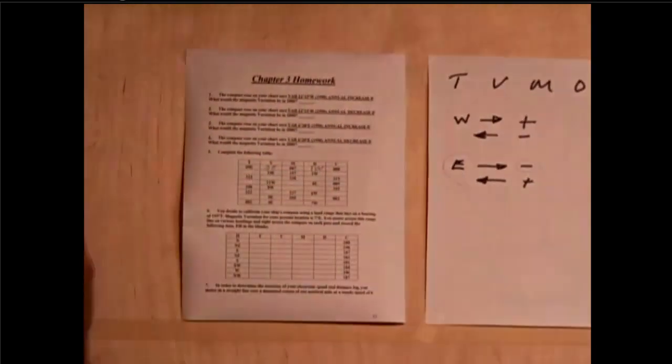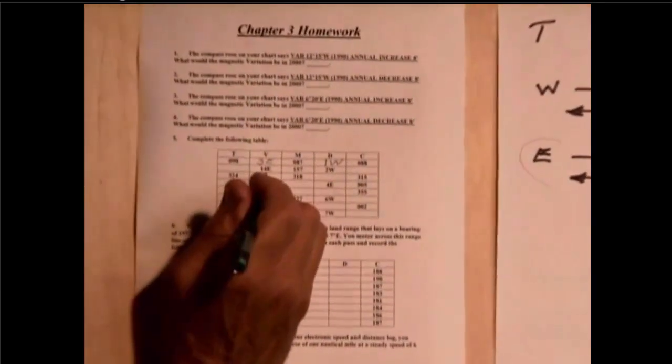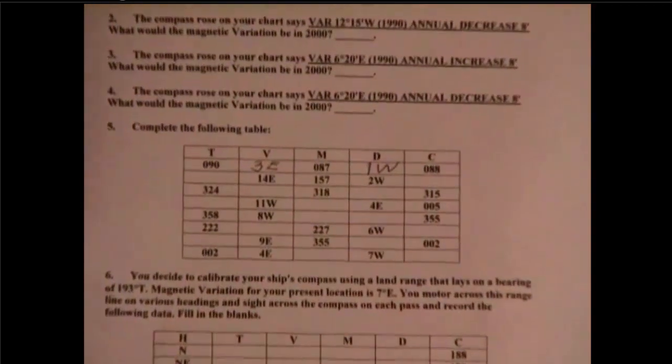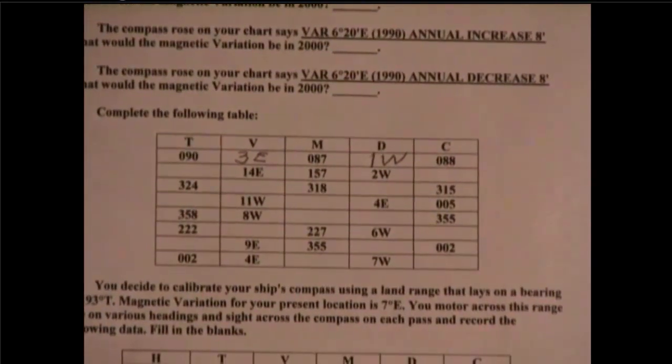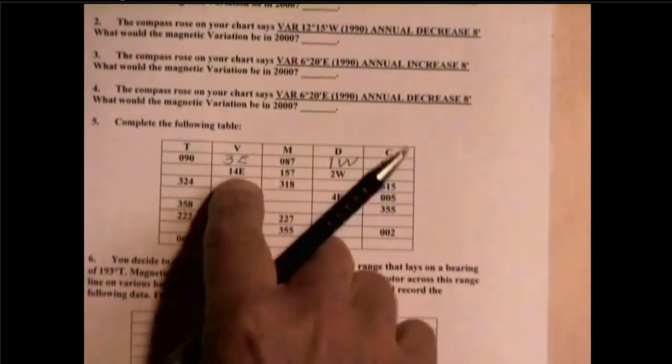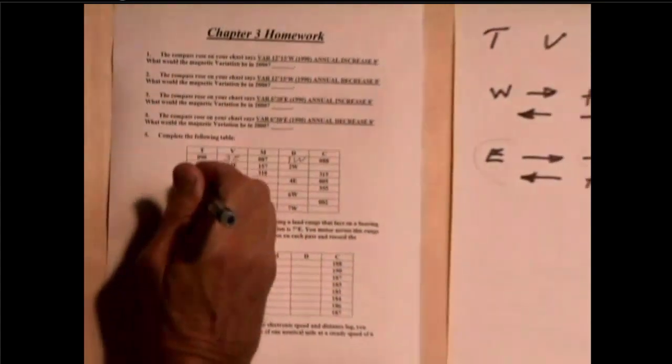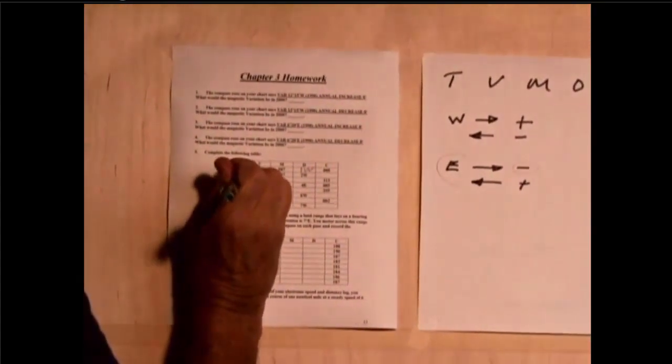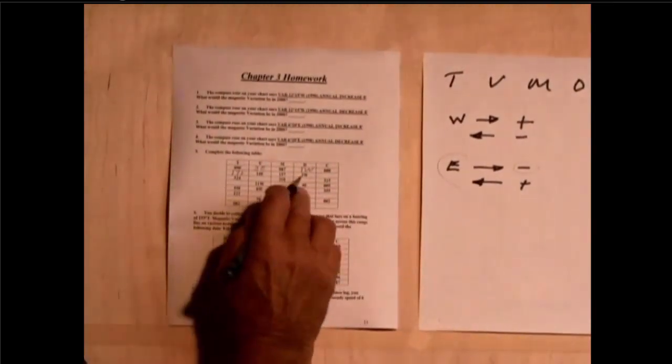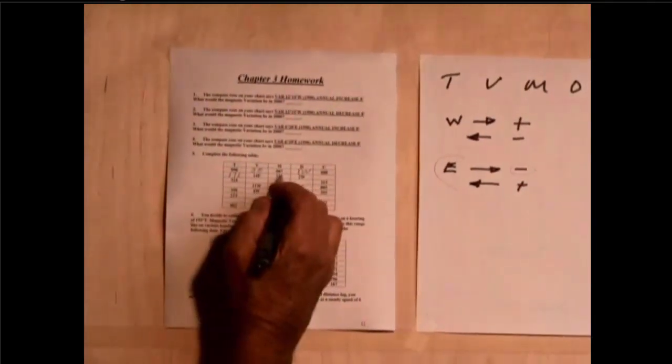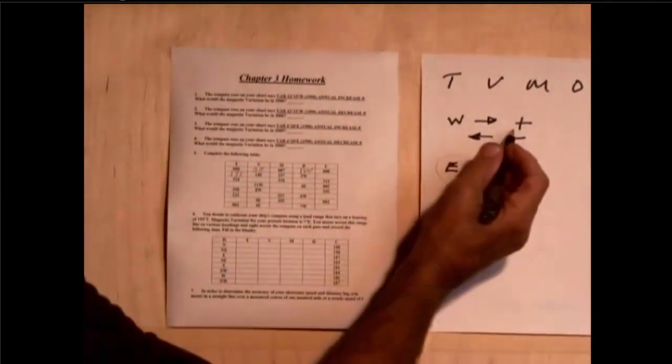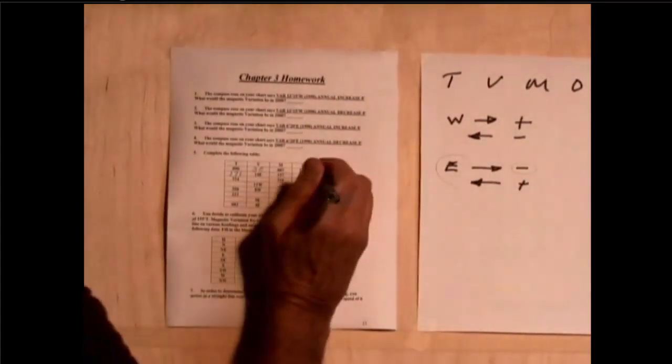Let's take the next one here. If I have 157 magnetic and 14 east, and I'm traveling from right to left, that means I'm going to add the 14 to the 157 and get 171. And going here to figure out the compass, the PSC, 157 plus 2 west is going to be 159.